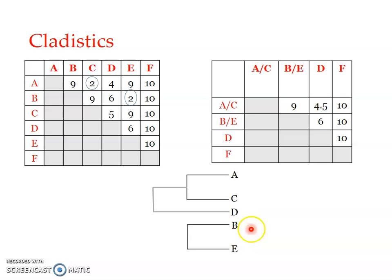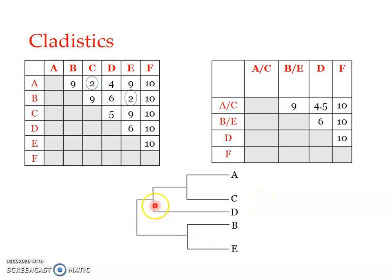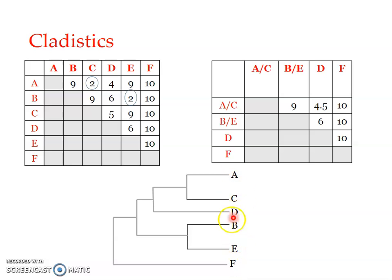Next, B-E has 9 differences with A-C, 6 differences with D, and 10 differences with F. So B-E is closely related to D, not to F or A-C. That is represented accordingly in the cladogram. As for F, it shows 10 differences with A-C, 10 with B-E, and 10 with D — meaning F is equidistantly and distantly related to any of these combinations. F is actually an outgroup; it cannot be included within any of the other groupings.